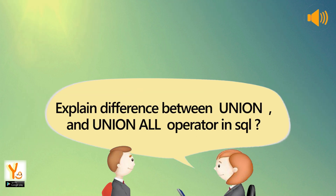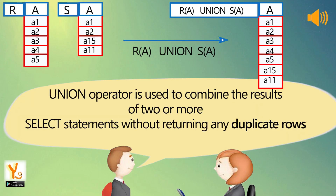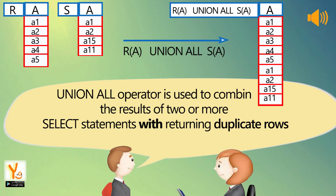Explain the difference between UNION and UNION ALL operators in SQL. The UNION operator is used to combine the results of two or more SELECT statements without returning any duplicate rows. The UNION ALL operator is used to combine the results of two or more SELECT statements while including duplicate rows.